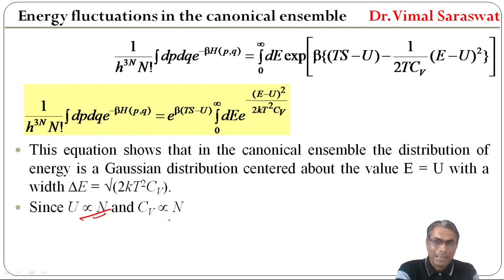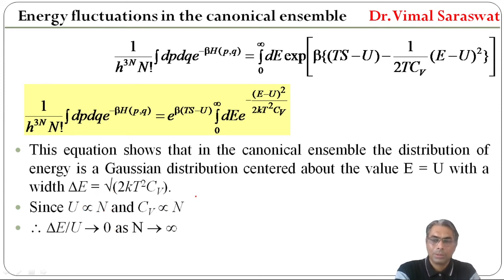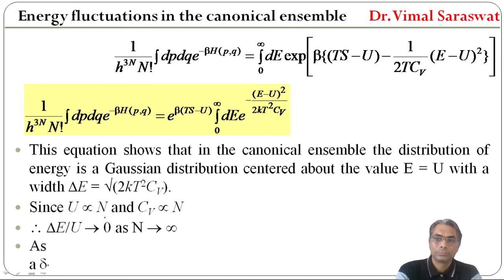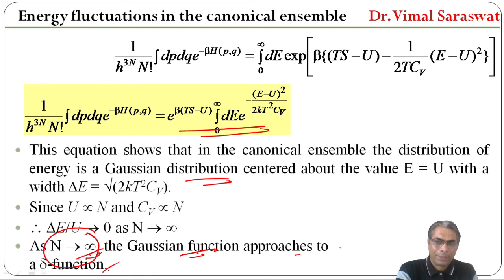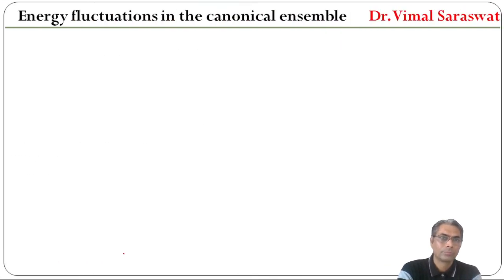Since U is directly proportional to N and Cv is directly proportional to N, therefore delta E upon U tends to 0 as N tends to infinity. As N tends to infinity, the Gaussian function approaches to a delta function.